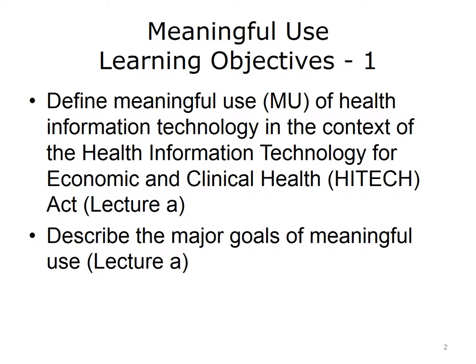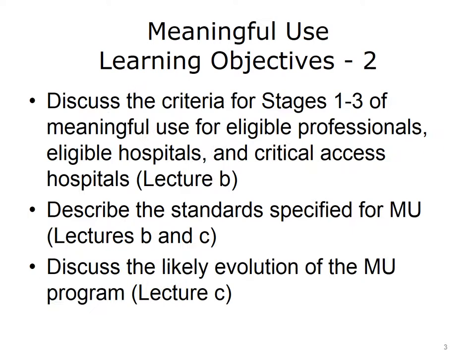The objectives for this unit on Meaningful Use are to define Meaningful Use, or MU, of Health Information Technology in the context of the Health Information Technology for Economic and Clinical Health, or HITECH Act. Describe the major goals of Meaningful Use. Discuss the criteria for Stages 1 to 3 of Meaningful Use for eligible professionals and eligible hospitals. Describe the standards specified for MU, and discuss the likely evolution of the MU program.